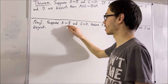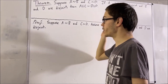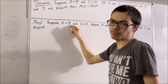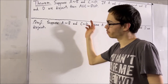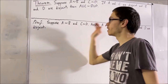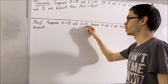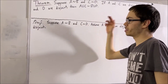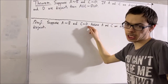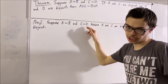We know that A is equinumerous with B, so there is a function from A to B that is bijective. I'll call that function F. And similarly, since C is equinumerous with D, we know that there is a function from C to D that is bijective. I'll call that function G.